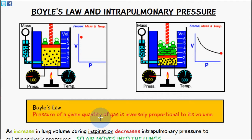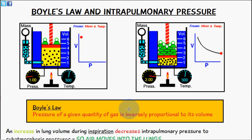Boyle's law is basically a principle where the pressure of a given quantity of gas is inversely proportional to its volume. What we mean by inversely proportional is as one value increases the other value decreases. So as the volume increases the pressure is going to decrease, and if the volume decreases then the pressure is going to increase.